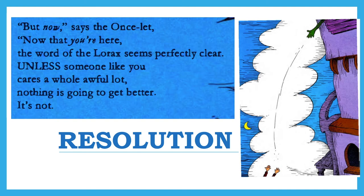This leads us towards a resolution where we learn the Onceler has remained haunted by the Lorax and the effect he had on the once-lush environment. He ends up realizing he must fix things by passing the last Truffula seed to someone who will care enough to regrow the forest. In the resolution, Dr. Seuss directly states his message: 'Unless someone like you cares a whole awful lot, nothing is going to get better. It's not.' This is his call to action. Dr. Seuss's use of creative characters and settings in a logical plot that mirrors the real world leads to an effective allegory about deforestation and advocacy.